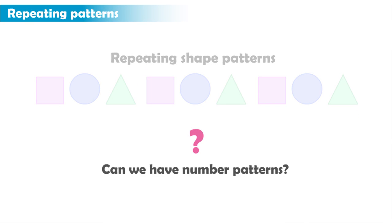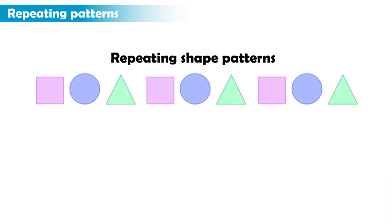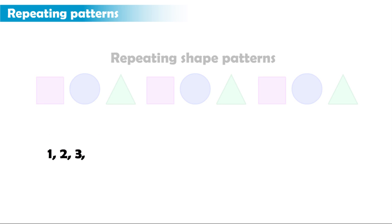What about numbers? Can we have number patterns? Well, if we think of a square as the number 1 and a circle as the number 2 and a triangle as number 3, then we will have the sequence as you see here.